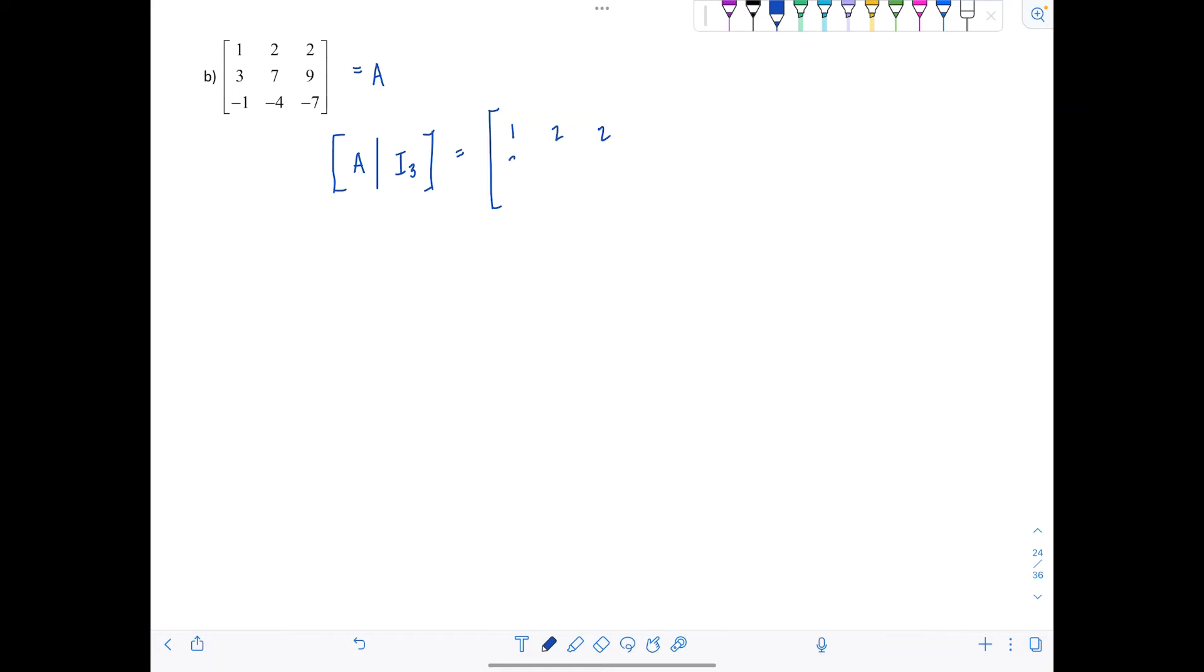Let's just rewrite everything. Matrix A: 1, 2, 2, 3, 7, 9, negative 1, negative 4, negative 7. And then on the other side we have 1, 0, 0, 0, 1, 0, 0, 0, 1. So far things are looking good. I already have my pivot here, top left. So now I need to make zeros beneath it in that column. Using the pivot, I would take negative three times row one plus row two. That's my new row two. And just adding row one and row three will give me a zero in that third row.